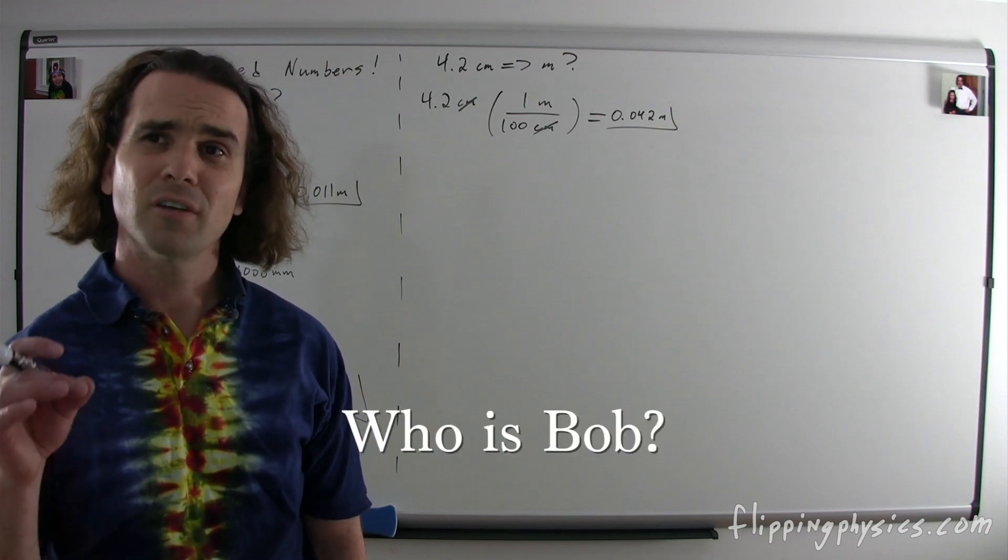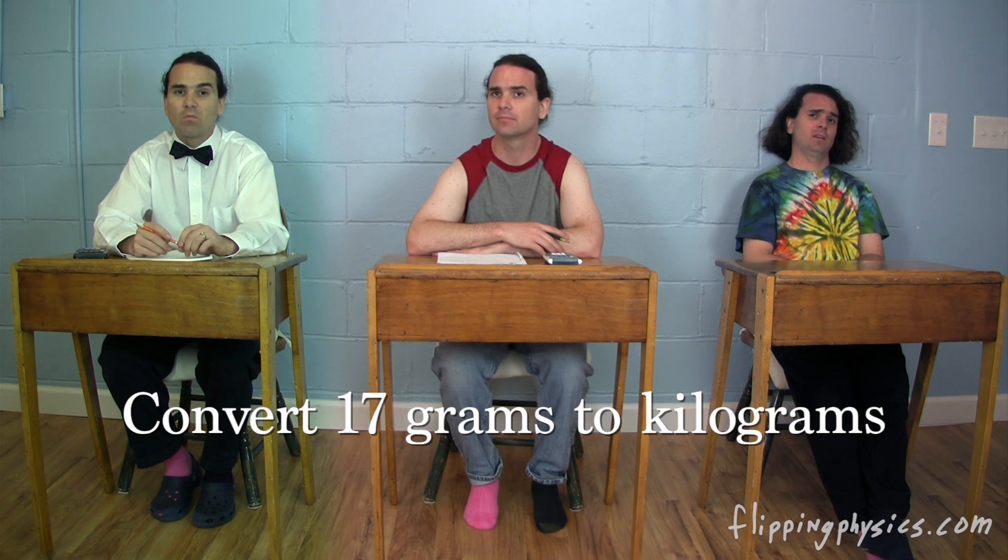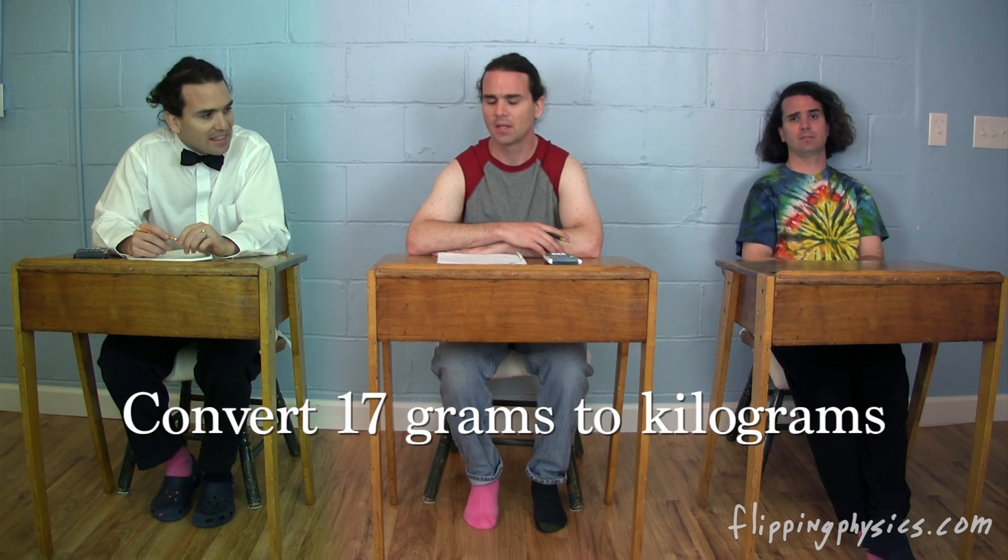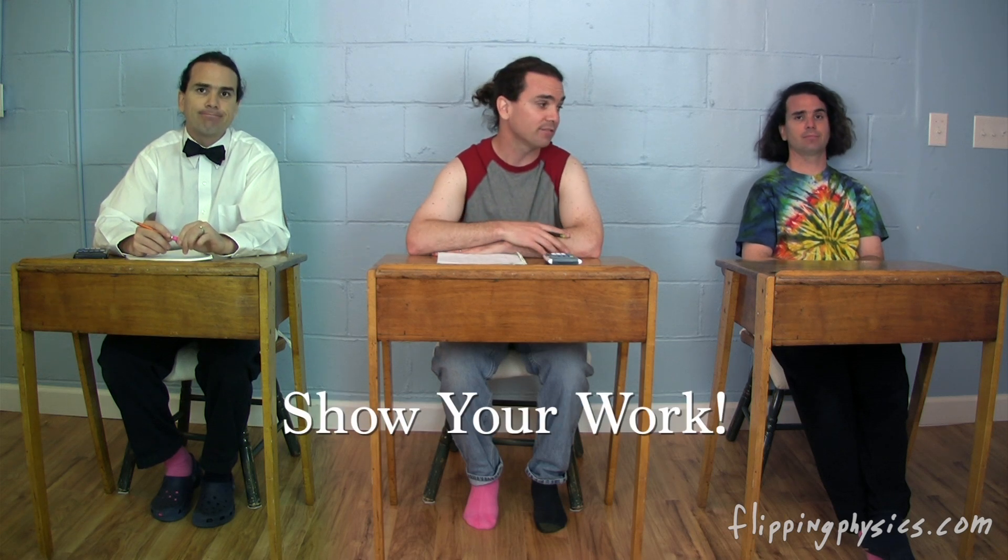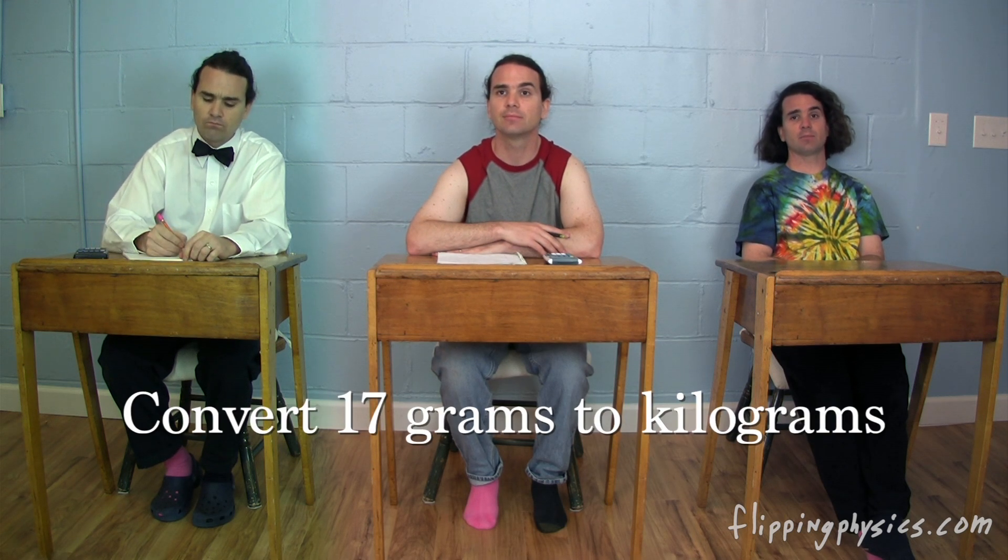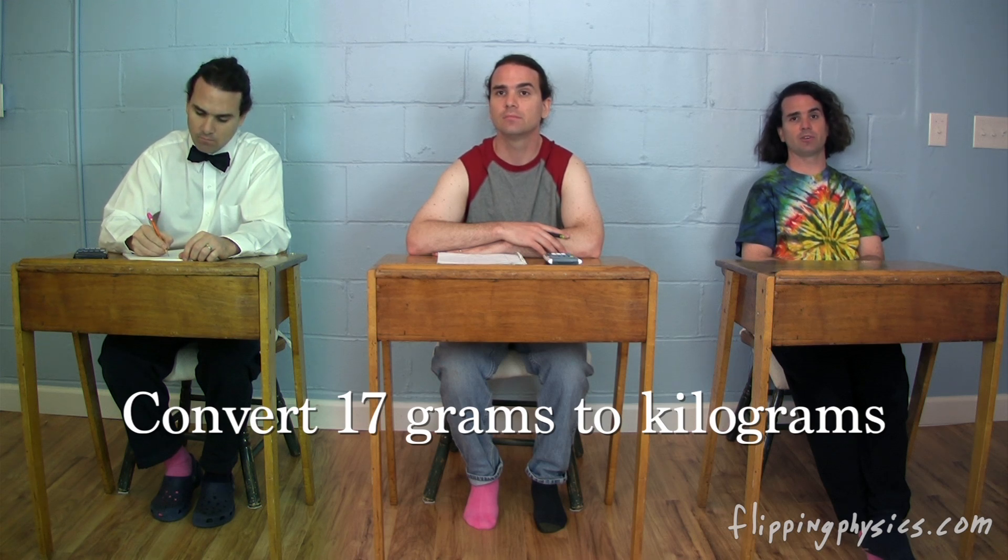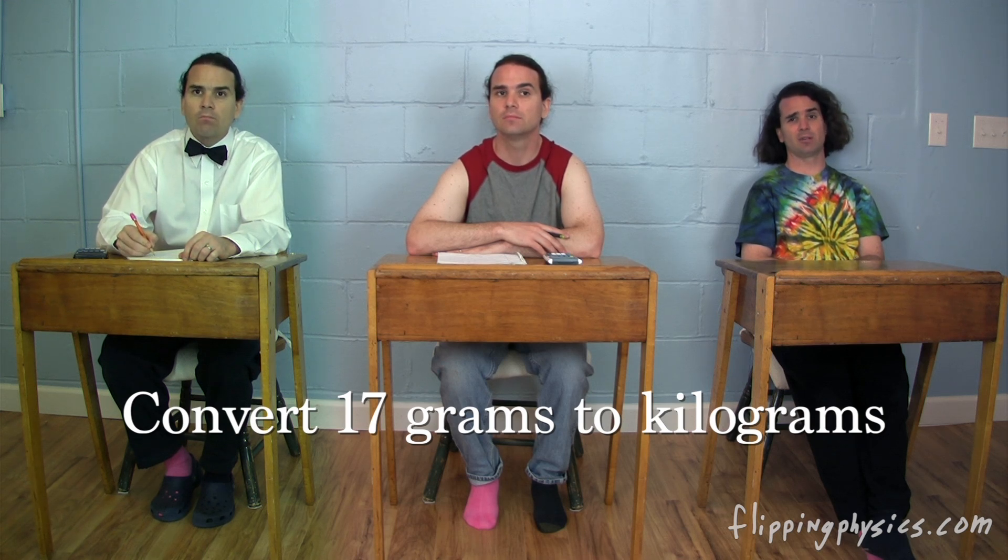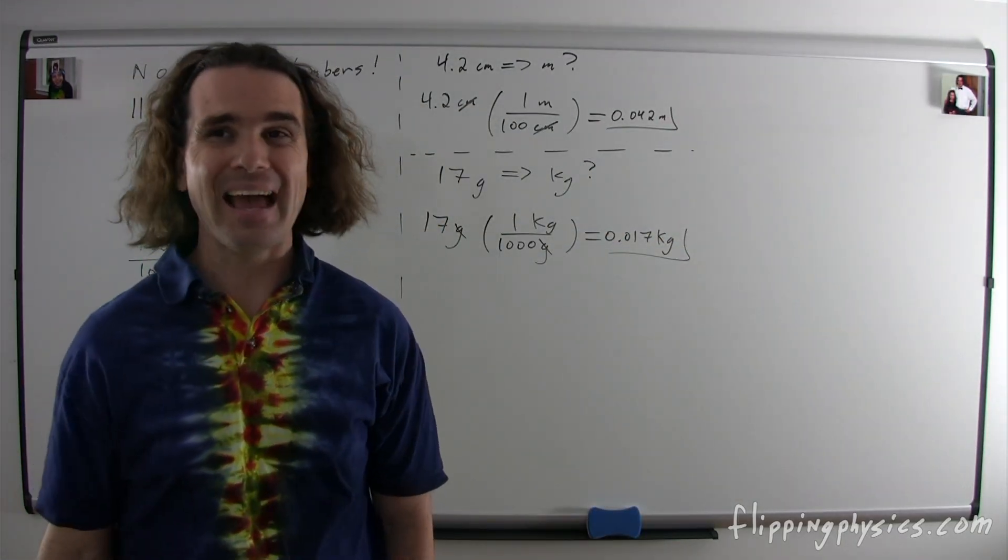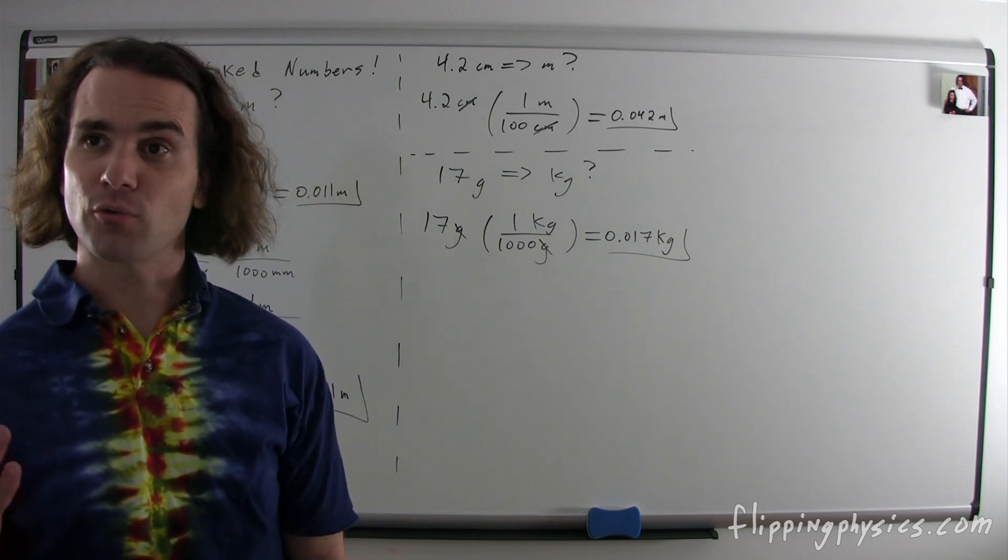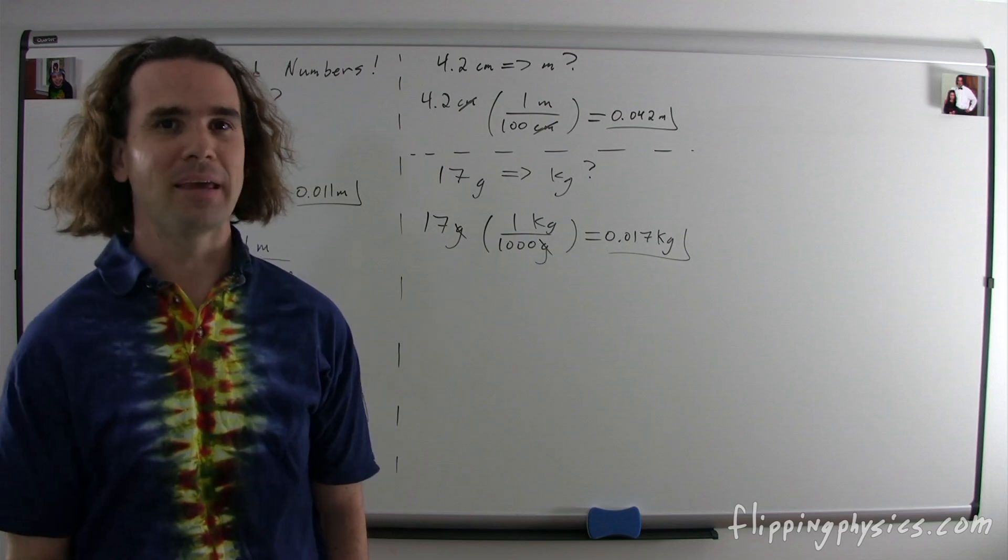Yep, 4.2 centimeters equals 0.042 meters. Bo, please convert 17 grams to kilograms. Don't you just divide by 1,000? I think that may be magic. Yeah, but we actually have to show our work in physics. Okay. There are 1,000 grams in 1 kilogram, so we multiply by 1 kilogram over 1,000 grams, we get 0.017 kilograms. Is that what you want?